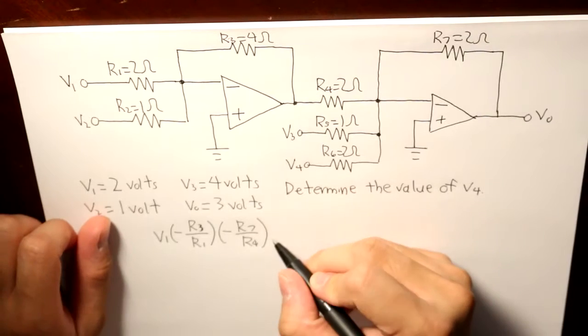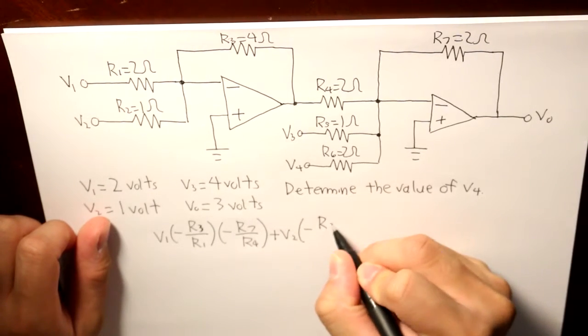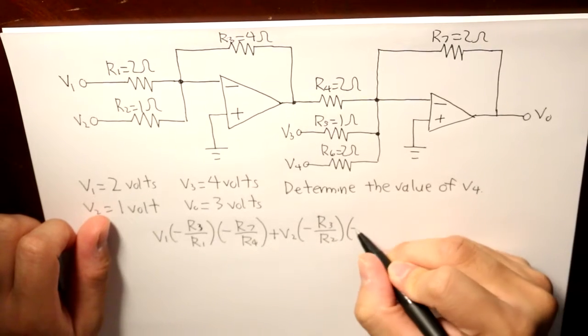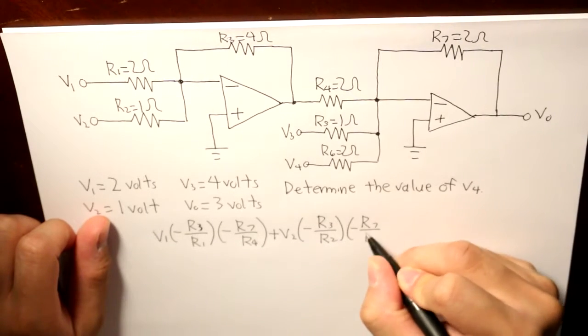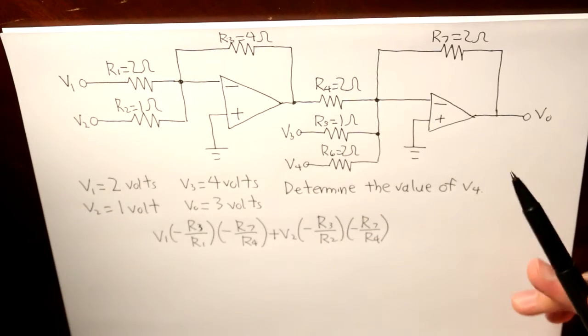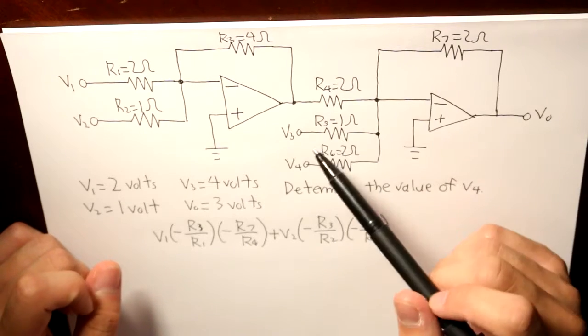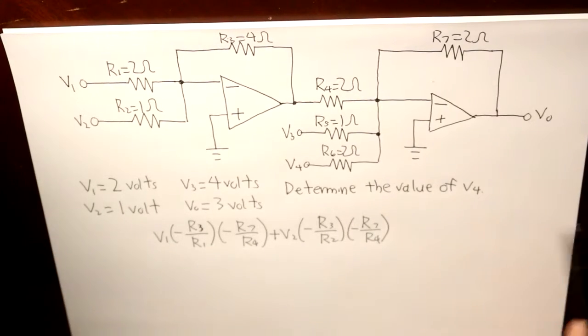Similar to V2, very much like this. And then V3 and V4 is basic. So we just take its input resistance and then its feedback resistance.